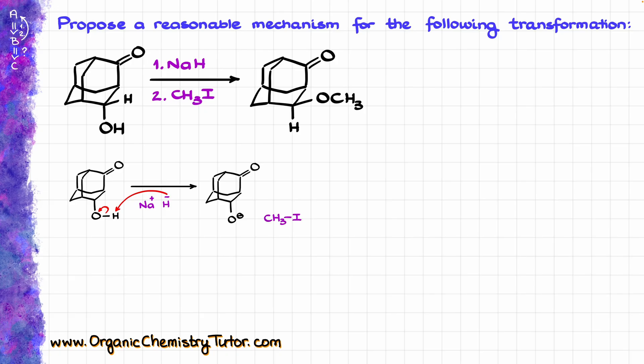Now if we just added our alkyl halide and did a simple SN2 reaction like so, we would end up with the following ether, but as we know, that does not happen. So what else might be happening in this reaction?